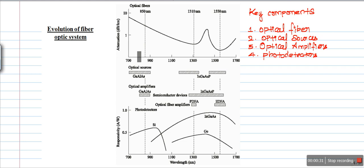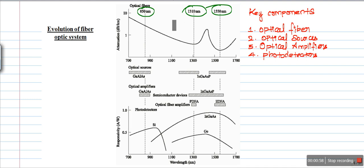Before that, we will understand the three optical operating windows. There are three optical windows: 850 nanometers, 1310 nanometers, and 1550 nanometers. This horizontal dotted line represents the operating windows of the optical communication system. Let me start with the optical fiber.